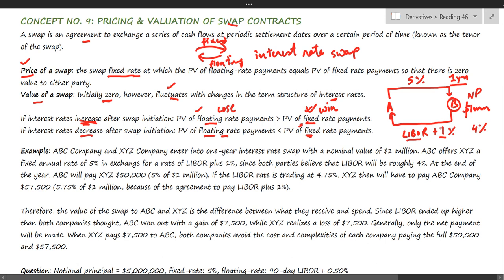But at the end of the year, let's say LIBOR turns out to be 4.75%. In that case, A will be winning because A only pays five percent, whereas B must pay 4.75% plus one percent margin — totaling 5.75%. So B is at a disadvantage. The final net payoff B makes to A is 0.75% of one million, which equals seven thousand five hundred dollars. There is no actual transfer of the one million notional principal, and A never transfers the fifty thousand to B — only the net payoff of $7,500 is made.